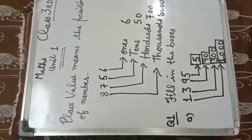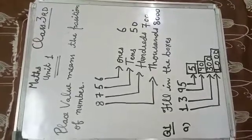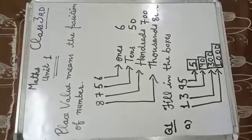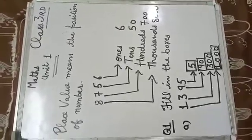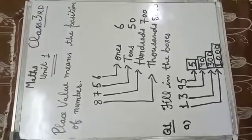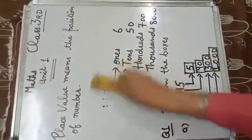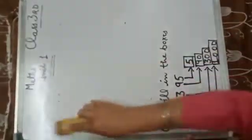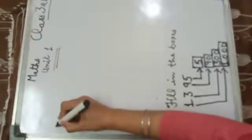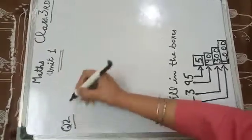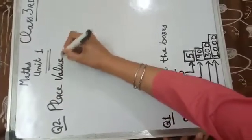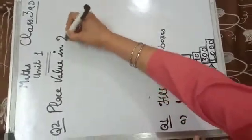Hope you understand the place value of each digit. Now we will write the place value in two ways.